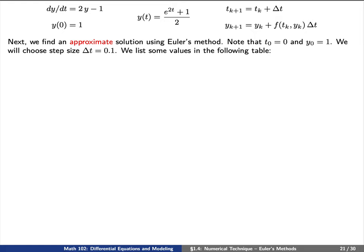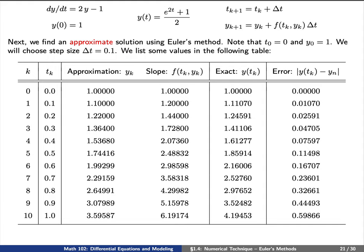For the moment, we're going to choose a step size delta t equals 0.1. Here we'll list some values of our sequences in the following table. You'll see here that it's a lot of work numerically to get this table to work out, but let's try to walk through step by step what's happening here in this table.